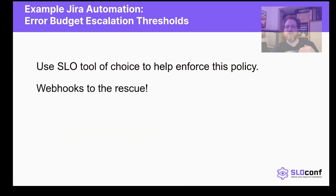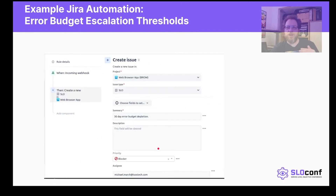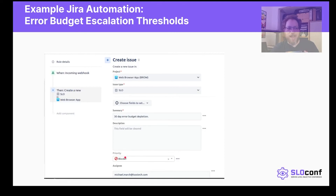We're going to use our SLO tool of choice to help enforce the policy using webhooks. In Jira we'll define an incoming webhook, and when the SLO tool triggers that webhook it will create an SLO task in our project of choice. We'll set the summary of that task to '30-day error budget depleted' and set it as a blocker, which gives the SRE more ammunition to deal with this in the proper way.